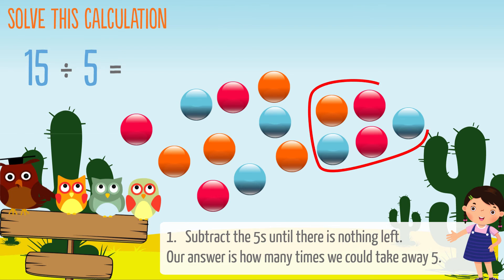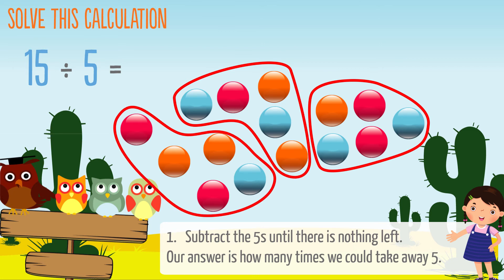One five, two fives, three fives. We took away five three times, so our answer is three. 15 divided by 5 equals 3.